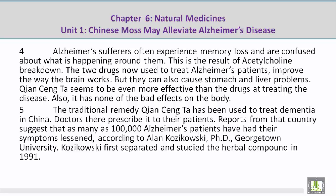Paragraph 5. The traditional remedy Qian Seng Ta has been used to treat dementia in China. Doctors there prescribe it to their patients. Reports from that country suggest that as many as 100,000 Alzheimer's patients have had their symptoms lessened. According to Alan Kozakowski, Ph.D., Georgetown University, Kozakowski first separated and studied the herbal compound in 1991.